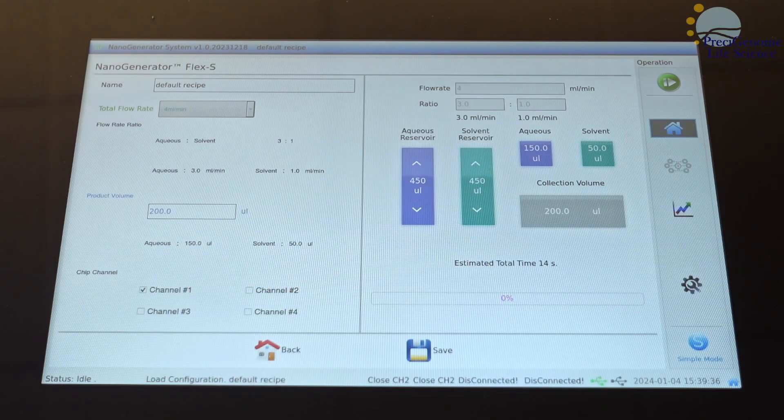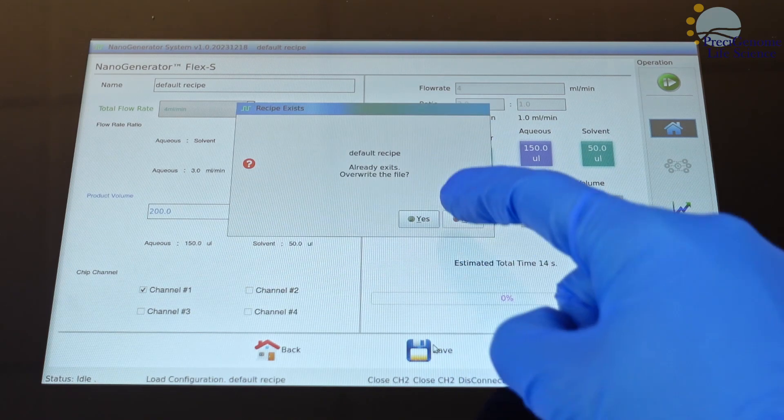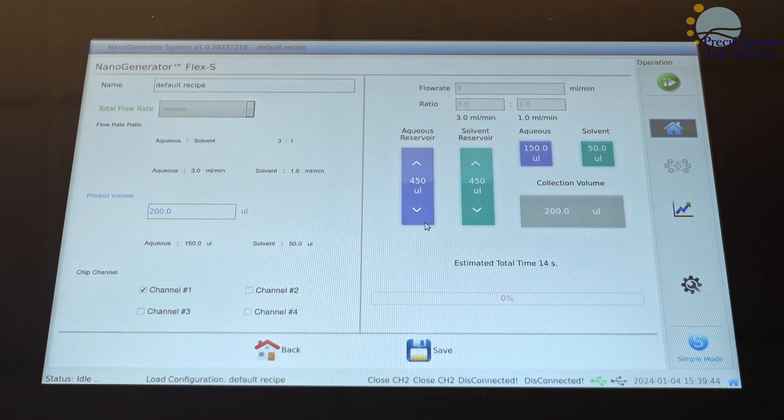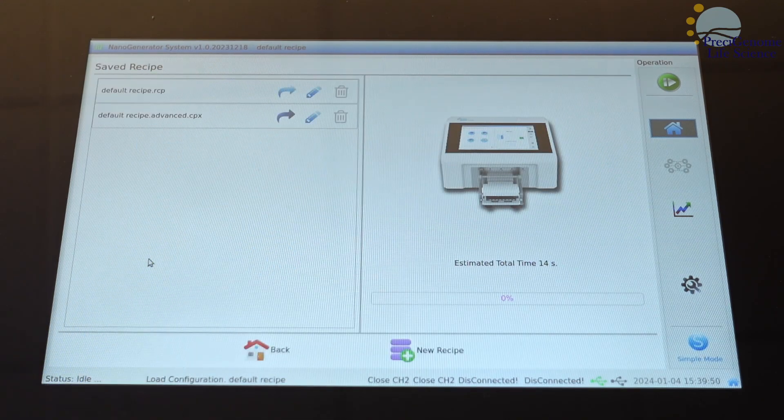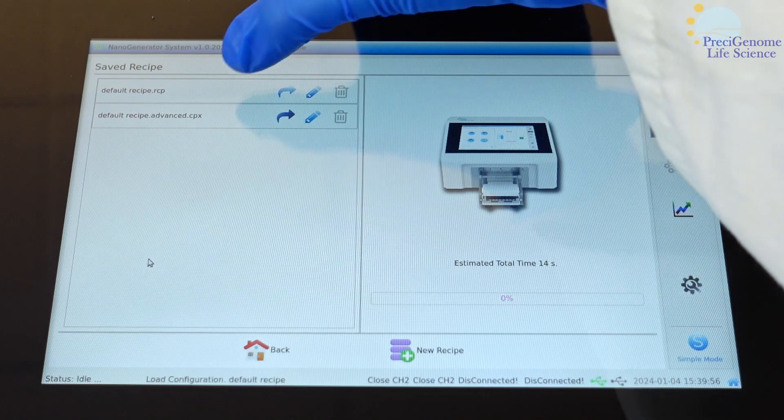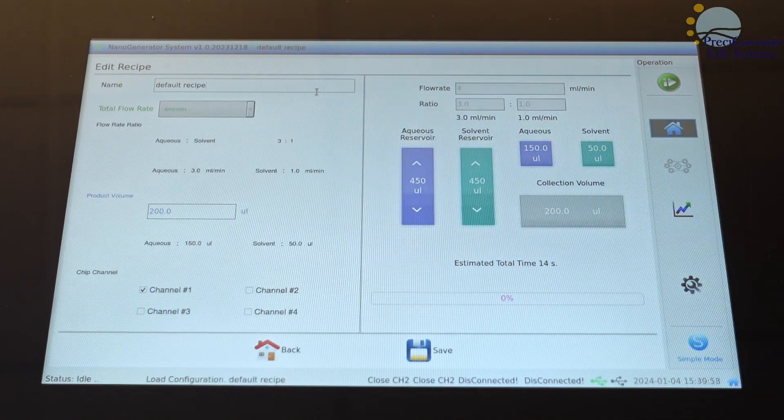When you are done setting your parameters, simply save the recipe and it is ready to go. You can find any previously saved recipes in the Saved Recipes menu. Simply highlight the recipe to load.